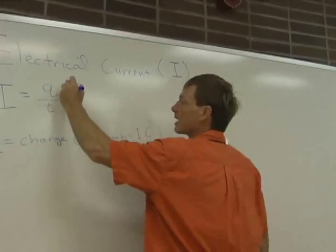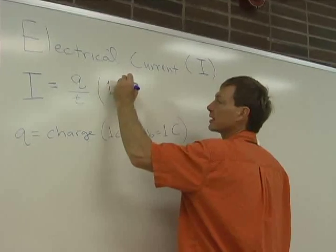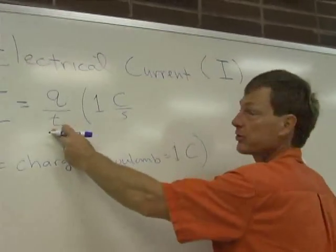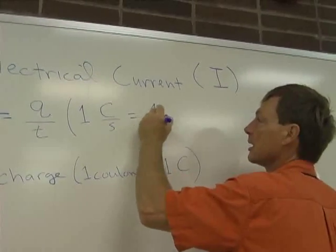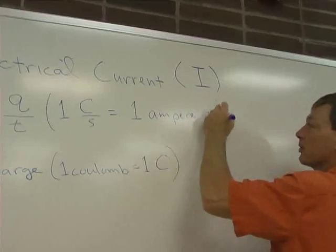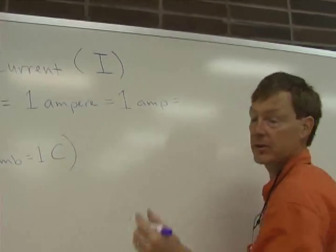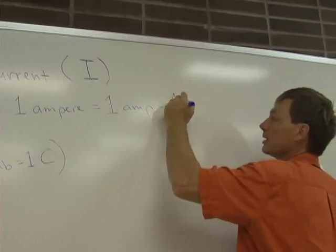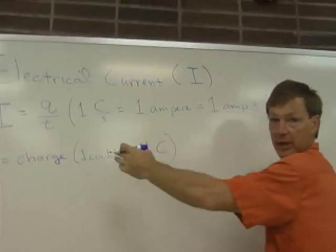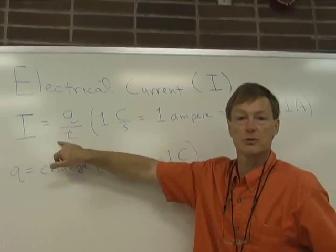And if you're dividing it by time, then the units of this would be Coulombs per second. And one Coulomb per time, one Coulomb per second, is the same as one ampere. It's a definition of an ampere, also known as an amp. Or with the abbreviations, it's just 1A. So an amp is Coulombs per second. And you can see it from the equation. Current is the rate at which charge moves over time.